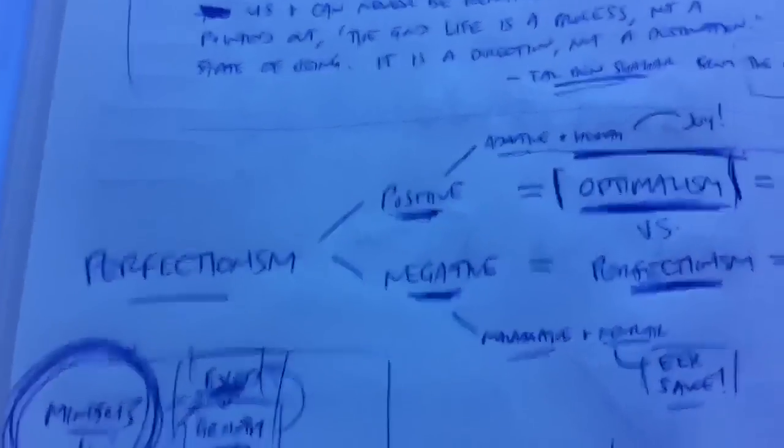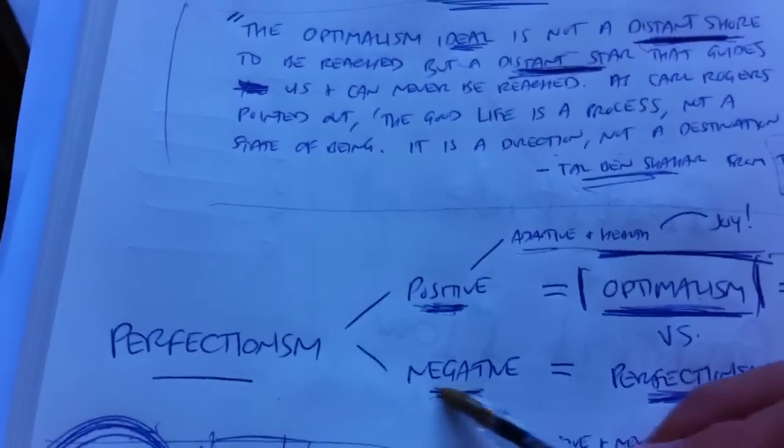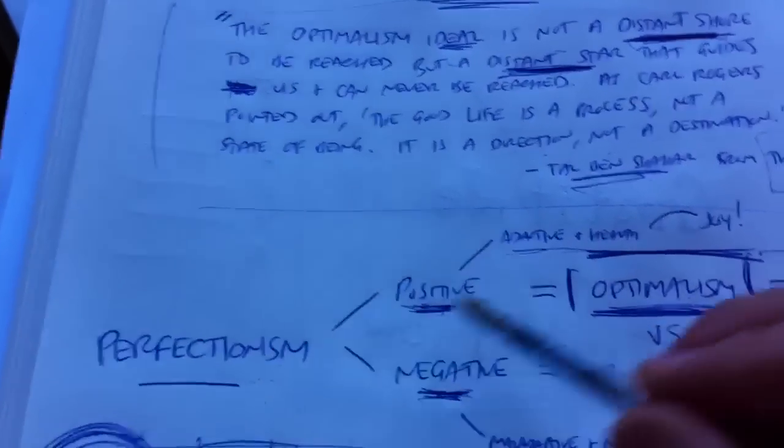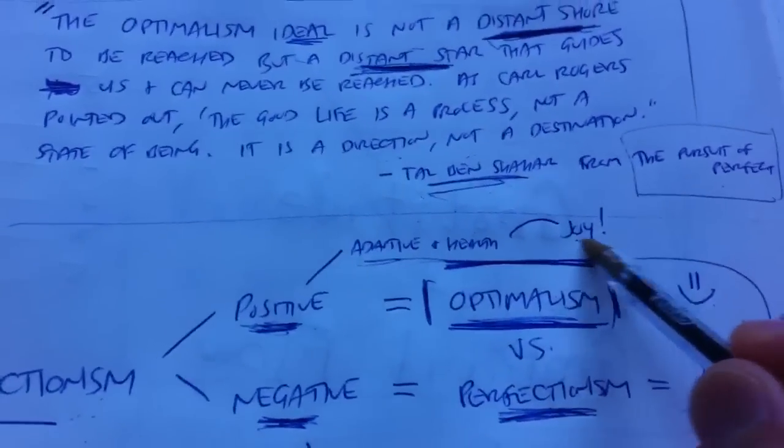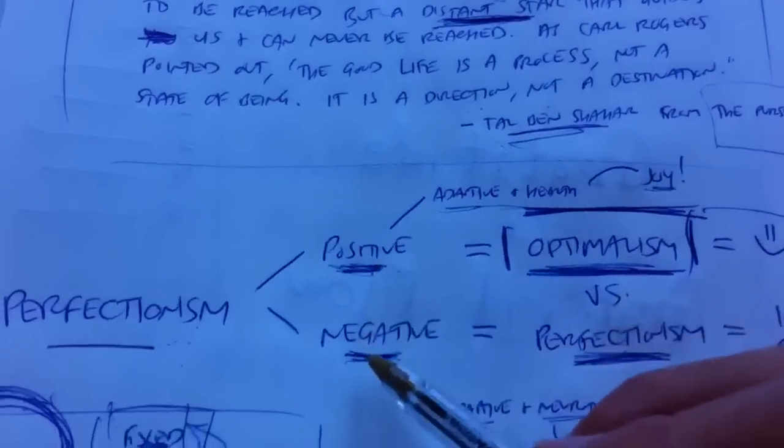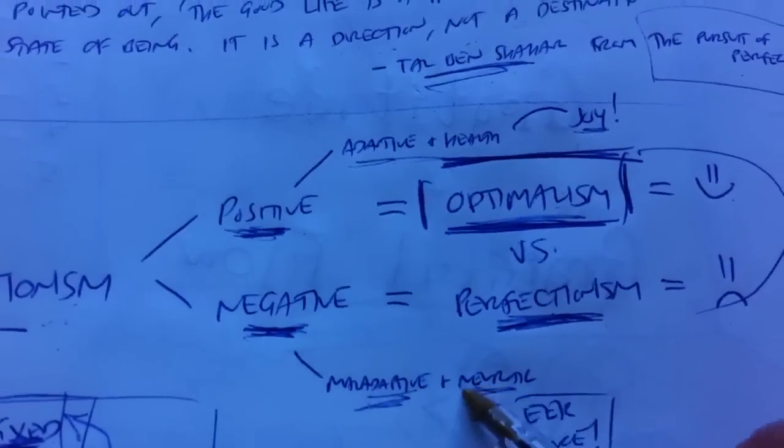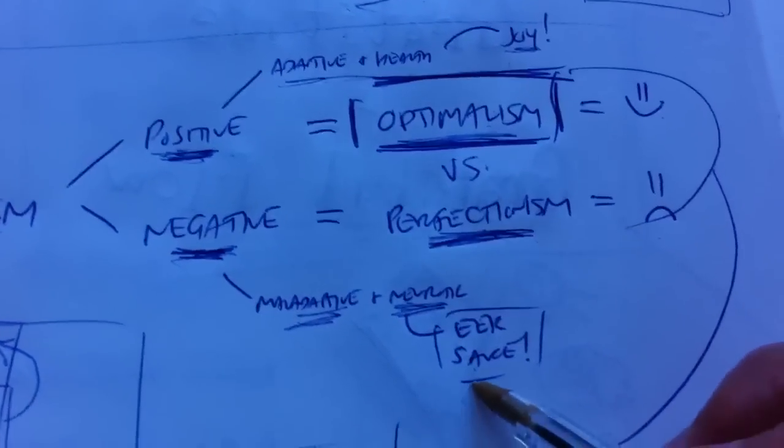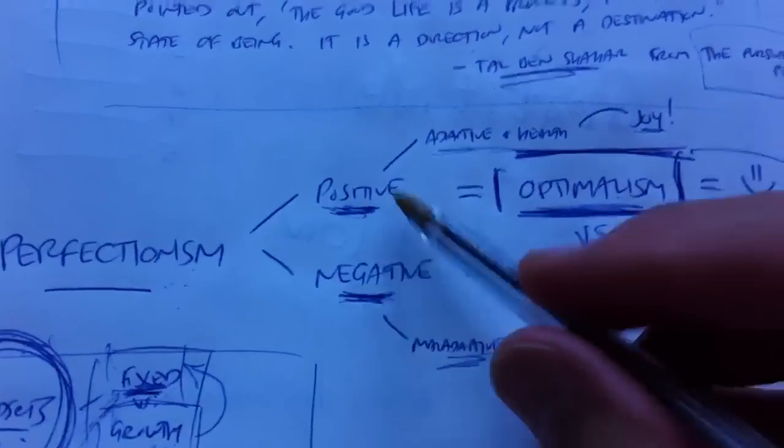Tal tells us that scientists look at perfectionism, and they say that there's a positive expression and a negative expression of perfectionism. The positive expression is actually adaptive and healthy. Leads to joy. It's a good thing. But the negative perfectionism is maladaptive, it's neurotic, and it leads to eek sauce. Negative, positive.